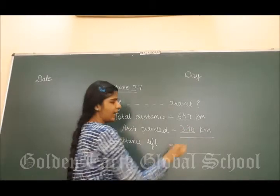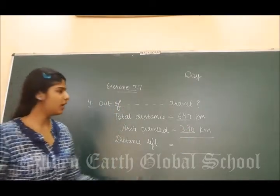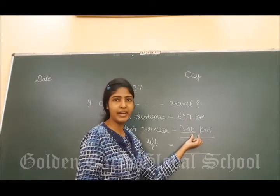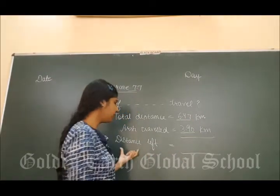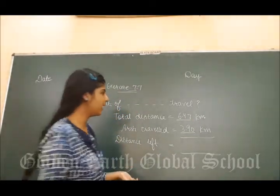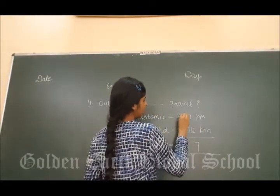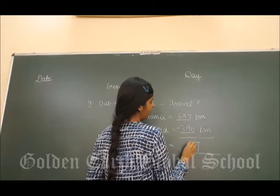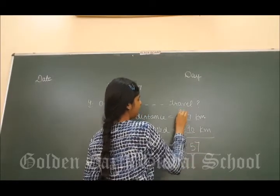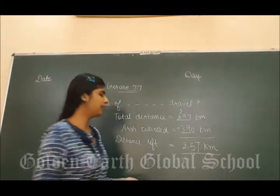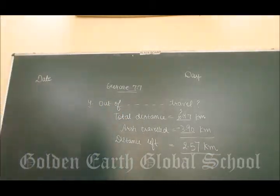Maine 3.90 likha to make it like decimal. Yahan pe 2 digits hai. So, yahan point ke baad kitna digits hone chahiye? 2. Now, distance left kitna? Subtract. 7 minus 0 is 7, 14 minus 9 is 5, 5 minus 3 is 2. So, the distance left to travel is 2.57 km. Clear everyone?